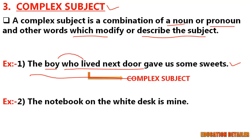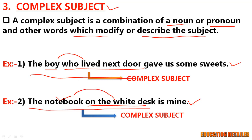Second example: the notebook on the white desk is mine. Here, easily we can say that the complex subject is the notebook on the white desk, because it is a combination of the main noun notebook and modifiers on the white desk, which gives us extra information about the headword notebook.